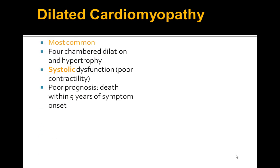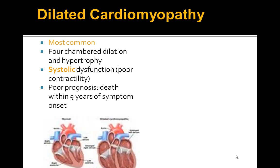Dilated cardiomyopathy is the most common type of cardiomyopathy. The pathophysiology involves dilation and hypertrophy of the four chambers. A key question is whether it is systolic or diastolic — this type is systolic dysfunction, mainly due to poor contractility.